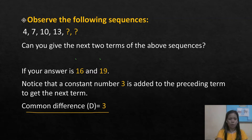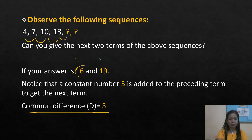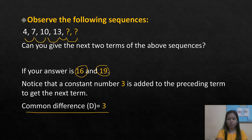So: 4 plus 3 is 7; 7 plus 3 is 10; 10 plus 3 is 13; 13 plus 3 is 16; and 16 plus 3 is 19. Our answer is 16 and 19 because we add 3 to get the next number.